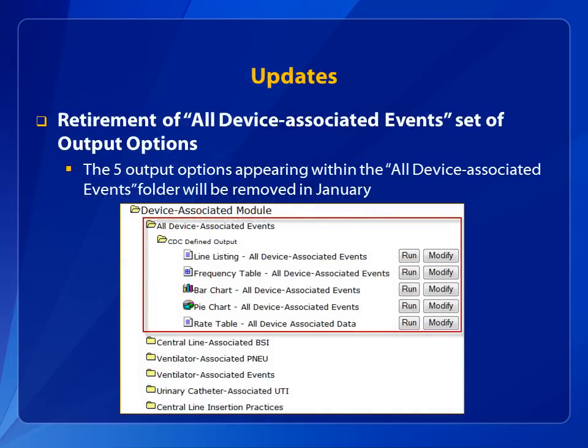The first update to patient safety analysis is related to the device-associated module. With the new release of NHSN version 8.3 in 2015, five output options that appear in the All Device-Associated Events Output Options folder are retiring. These are Line Listing All Device-Associated Events, Frequency Table All Device-Associated Events, Bar Chart All Device-Associated Events, Pie Chart All Device-Associated Events, and Rate Table All Device-Associated Data. We strongly encourage the use of event-specific output options for those accustomed to using the All Device-Associated Events set of output options.